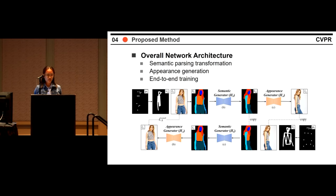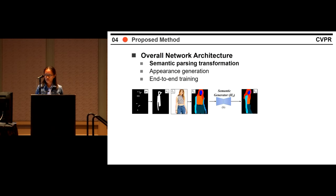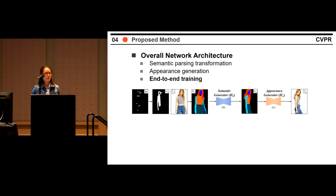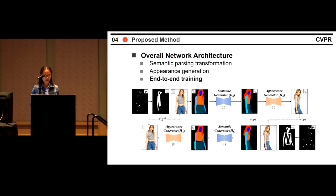In semantic parsing transformation, we aim to transform the semantic map of the condition image to the target pose. The semantic map provides shape and contour information, with which we generate the person's appearance using the appearance generator. Since we don't have ground truth images and target poses, we use cycle consistency to train our network. We also find that end-to-end training allows the network to refine semantic maps for better results.